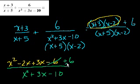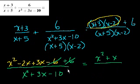The minus 6 and the plus 6 cancels out, and we're left with minus 2x plus 3x. So that's x squared plus x over x squared plus 3x minus 10. And that is choice A.